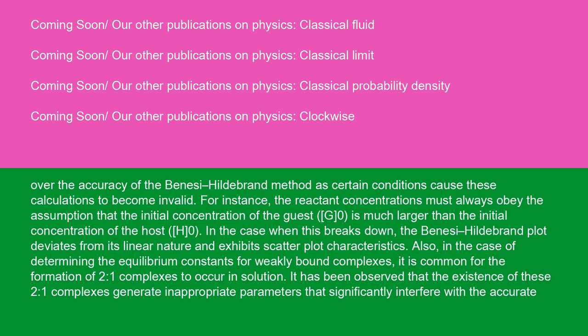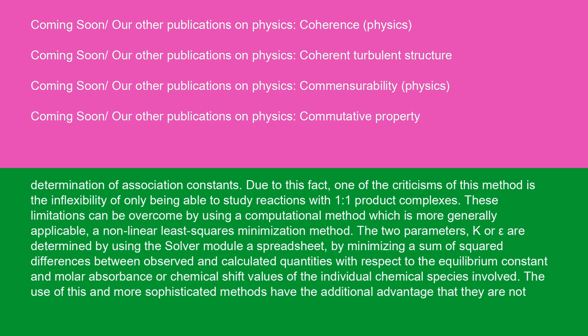Also, in the case of determining the equilibrium constants for weakly bound complexes, it is common for the formation of 2:1 complexes to occur in solution. It has been observed that the existence of these 2:1 complexes generate inappropriate parameters that significantly interfere with the accurate determination of association constants. Due to this fact, one of the criticisms of this method is the inflexibility of only being able to study reactions with 1:1 product complexes.